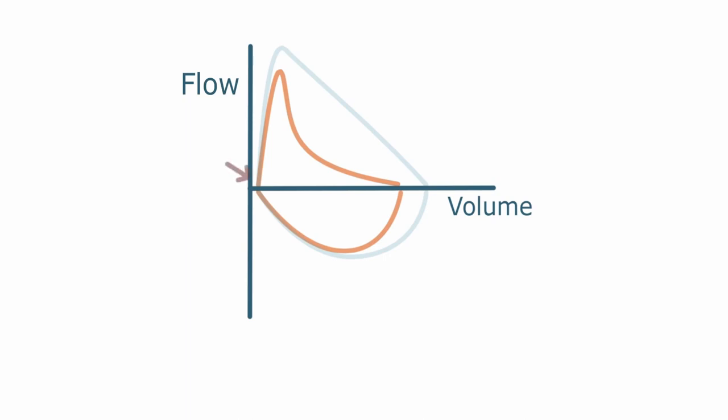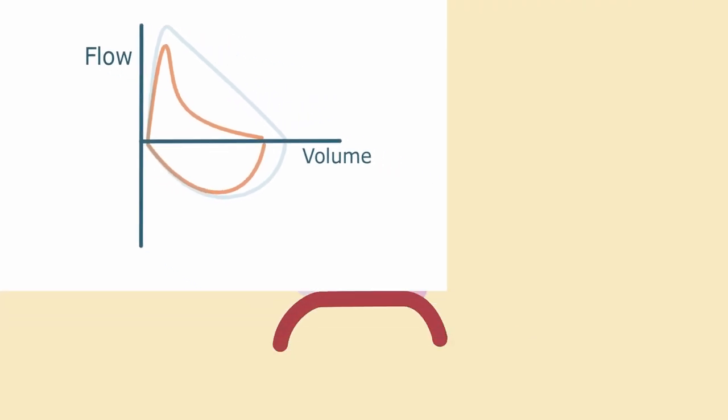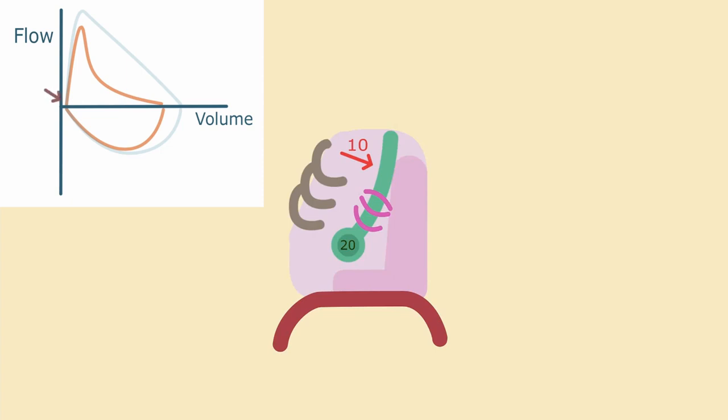So this is how an obstructive spirometry looks like. In our illustration here, we will add an obstruction where obviously the resistance is much higher than the other parts of the airway.